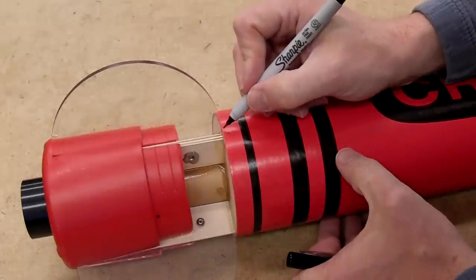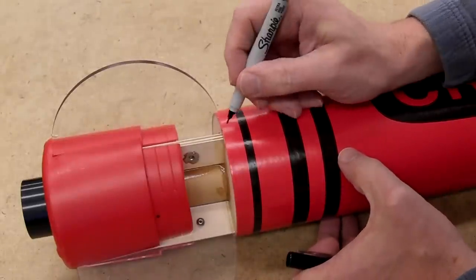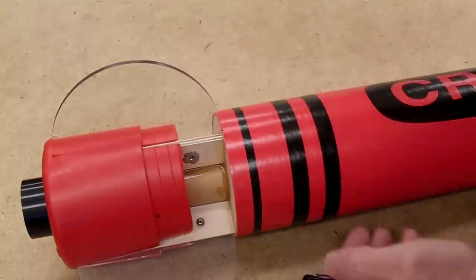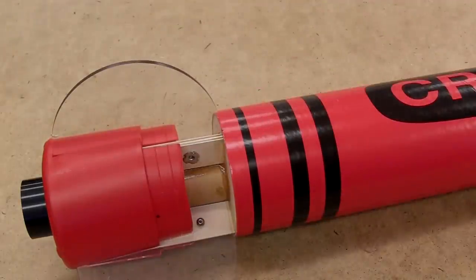Of course you also need to slot some part of the main airframe so we can slide that over the fin can, mark the space for the fins, and get ready to cut.